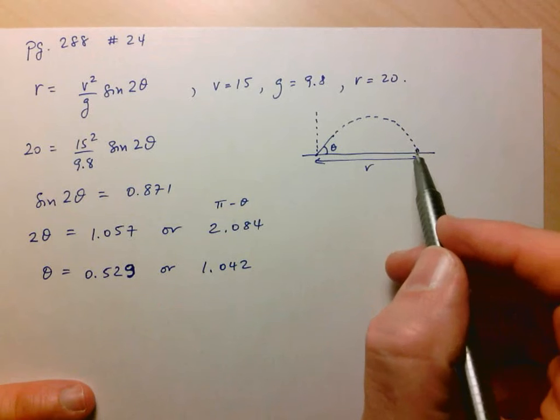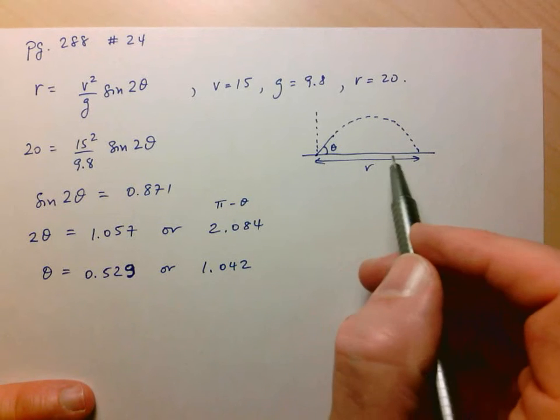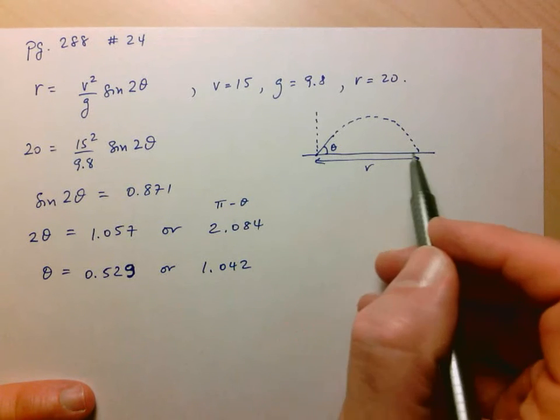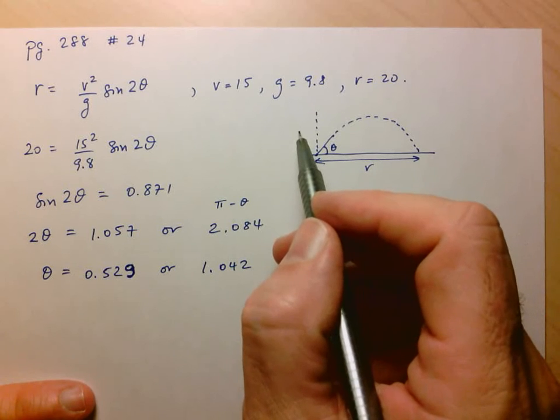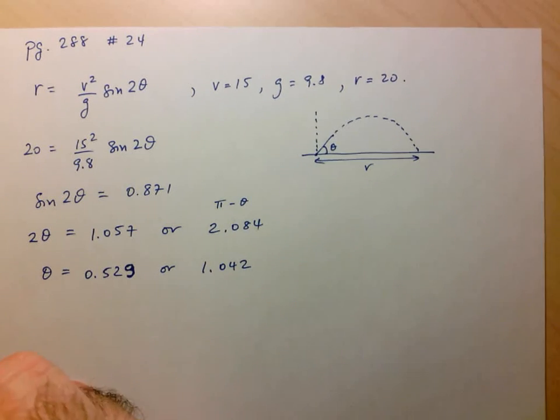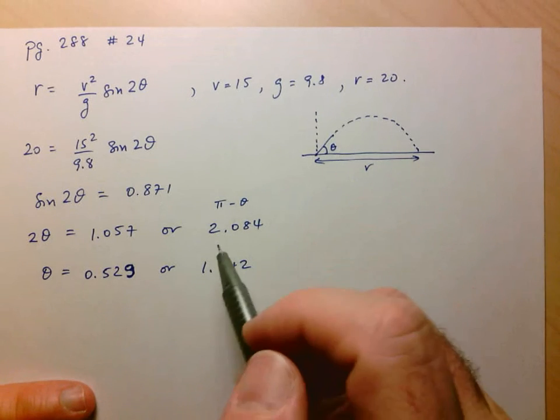Assuming that the target is somewhere in this direction, it doesn't make sense to be launching yourself in the other direction. So we should limit ourselves to 0 to pi over 2.